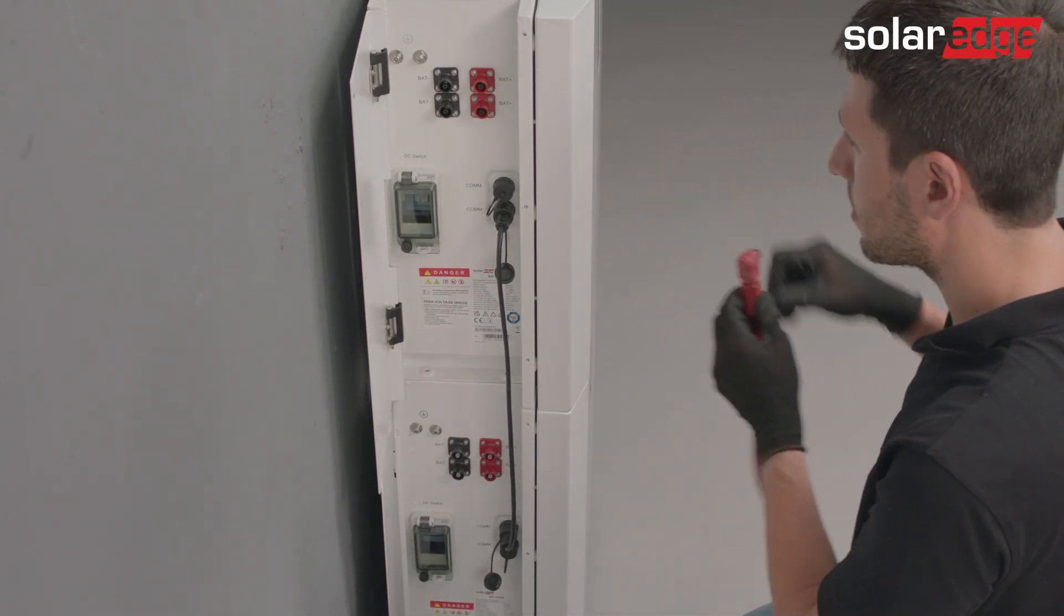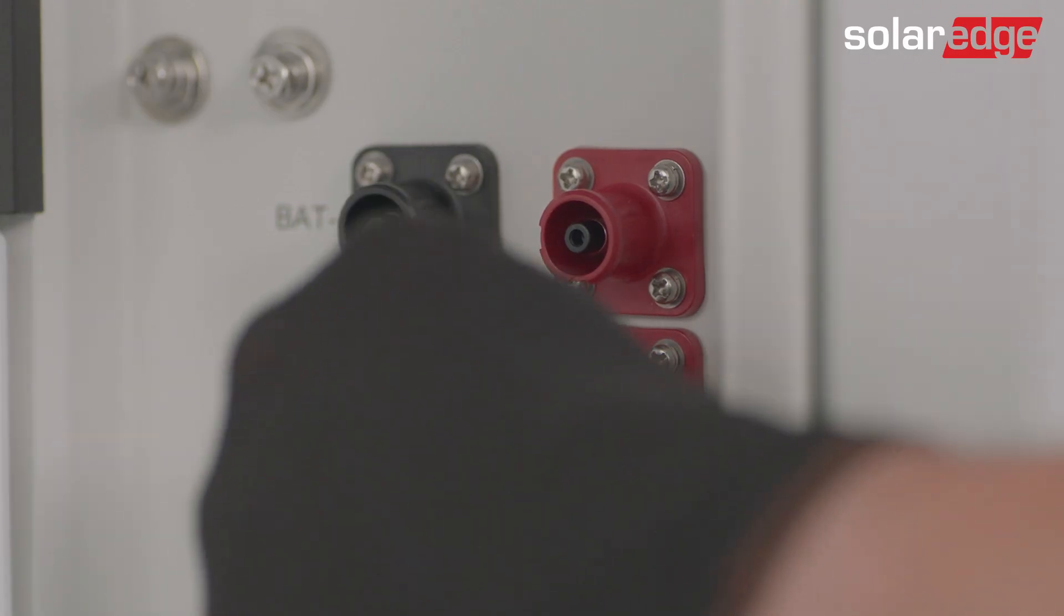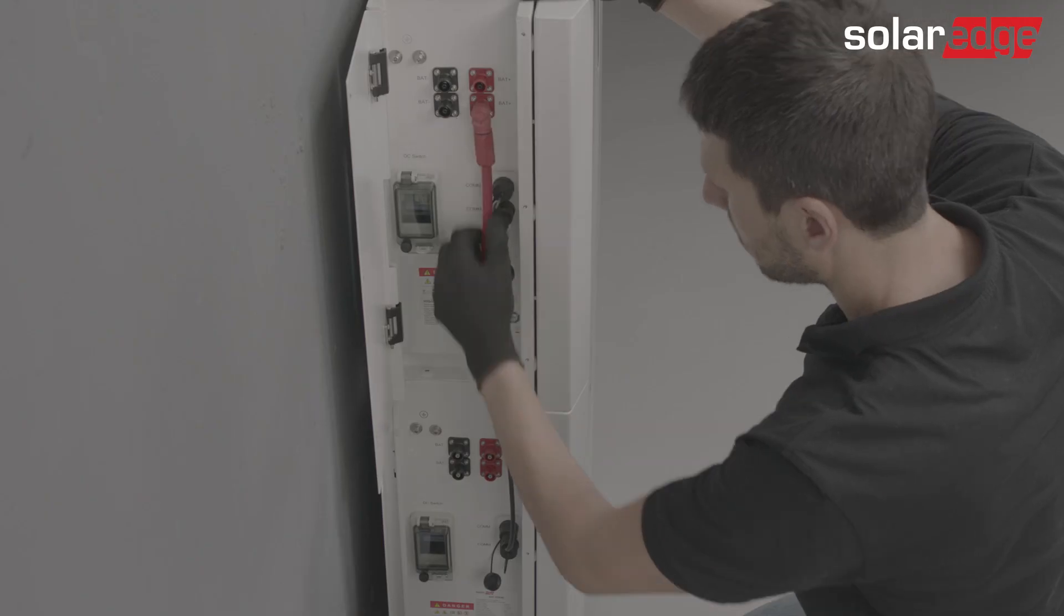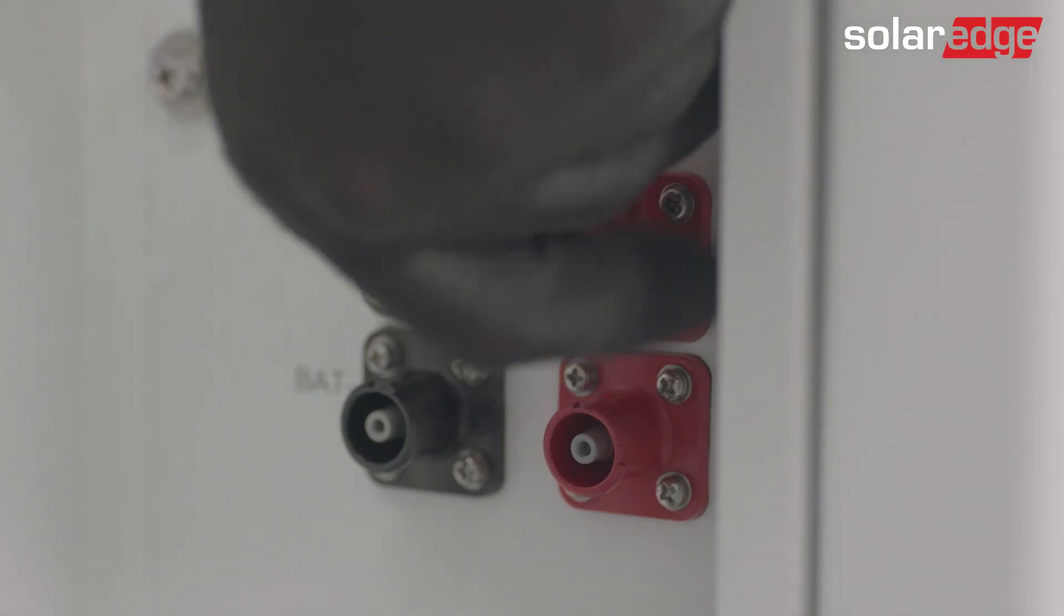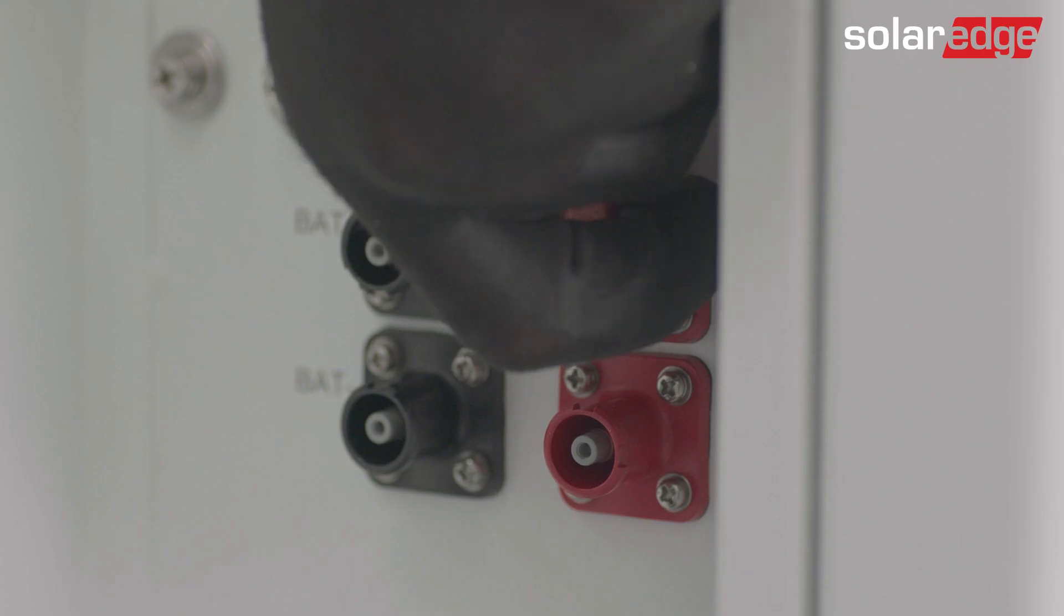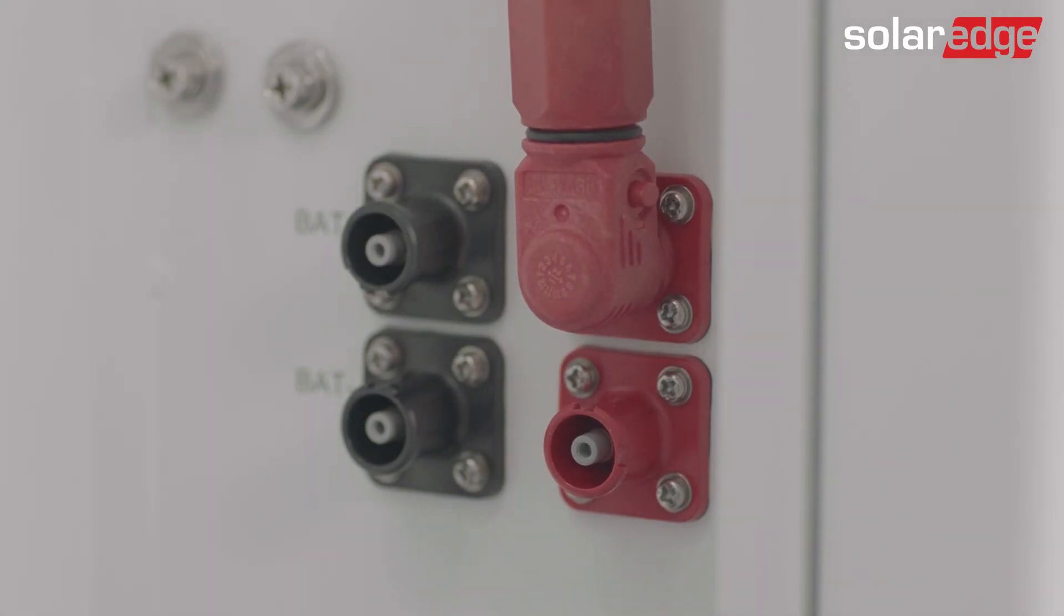If it doesn't screw easily, please unscrew it and try again. Now, assemble the red cable between the bottom red DC connector of the upper battery to the upper red DC connector of the bottom battery. You will need to hear a click sound once it's properly connected.